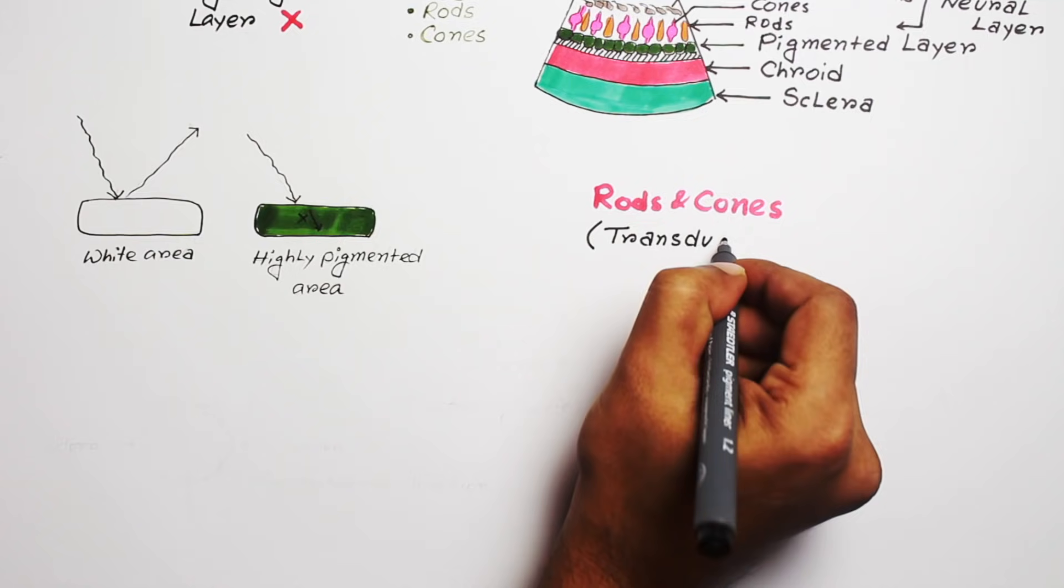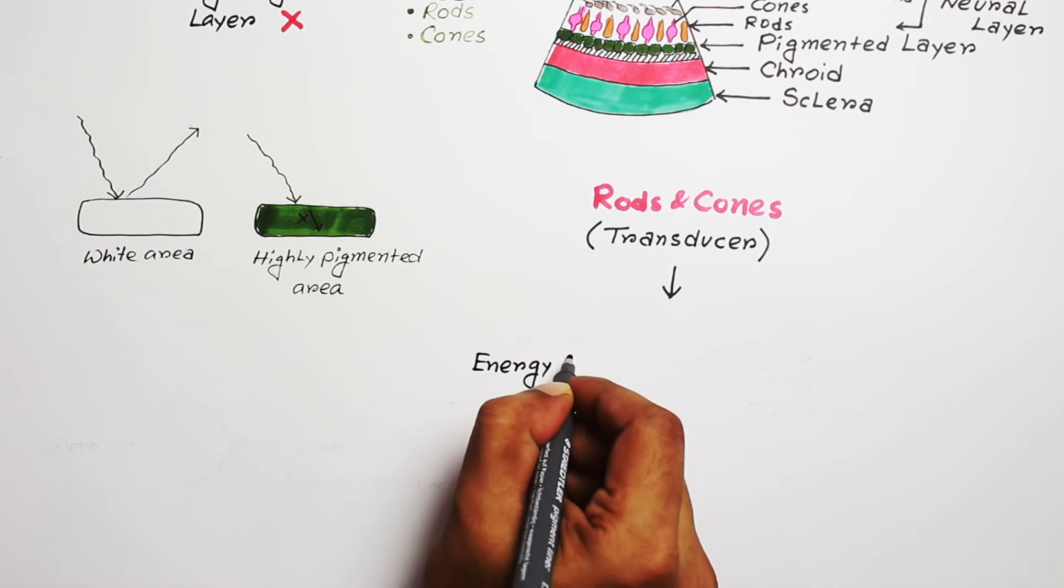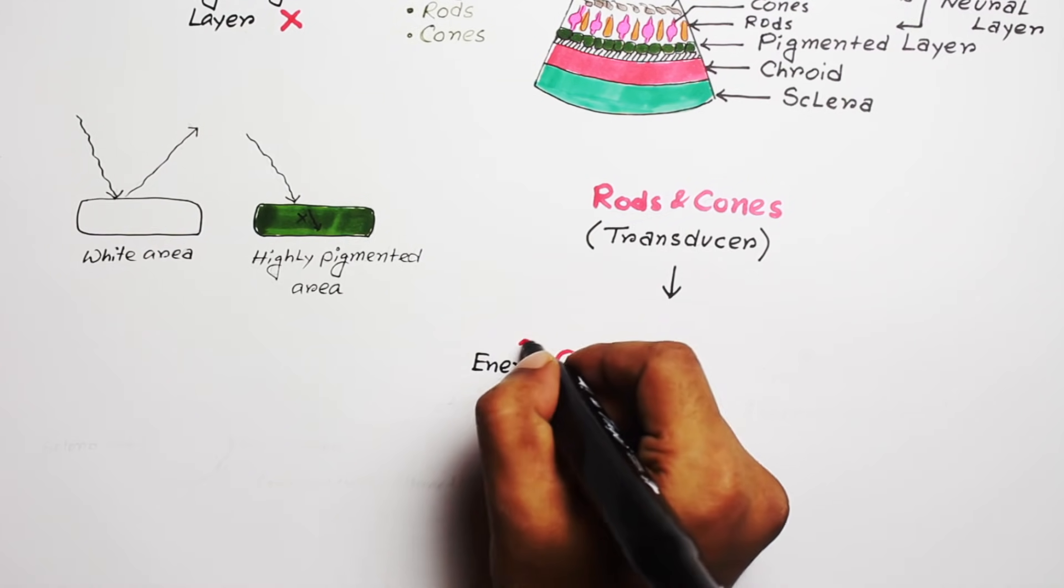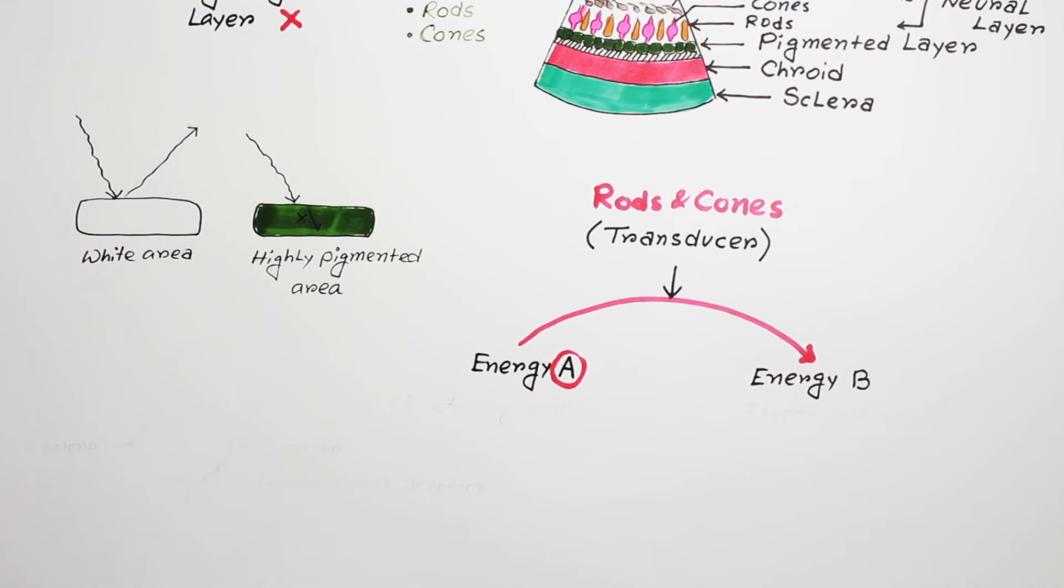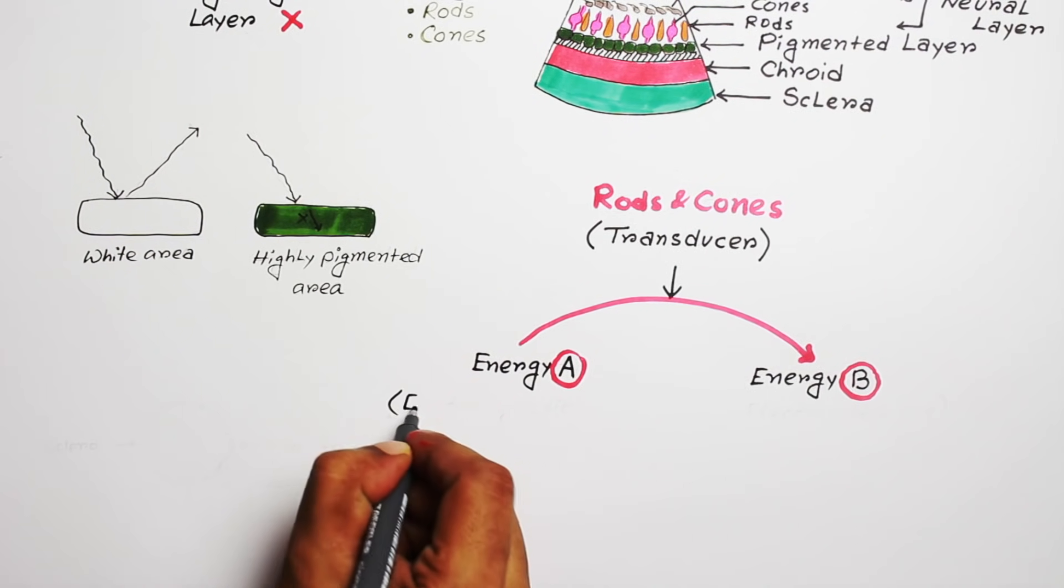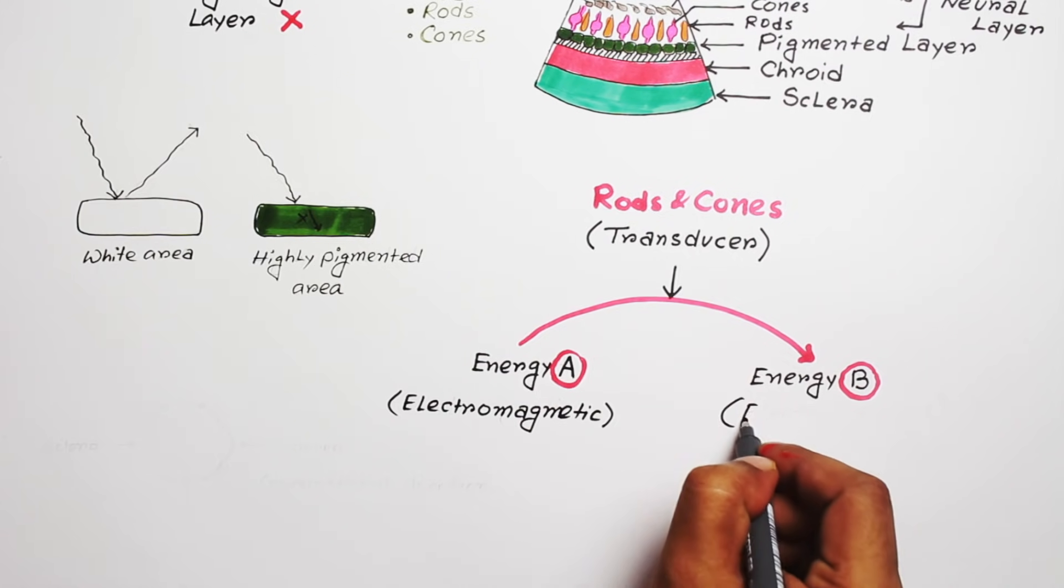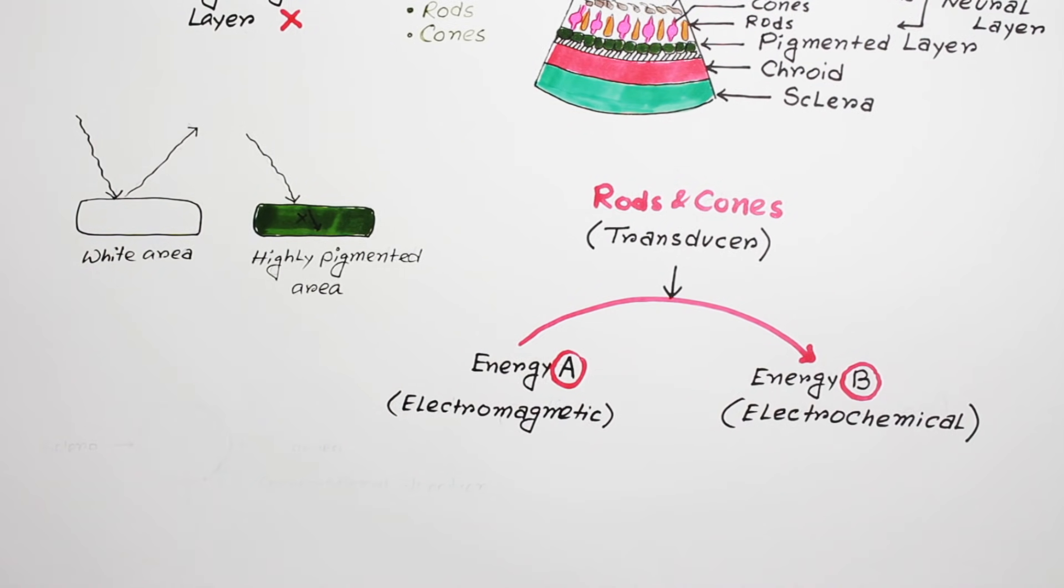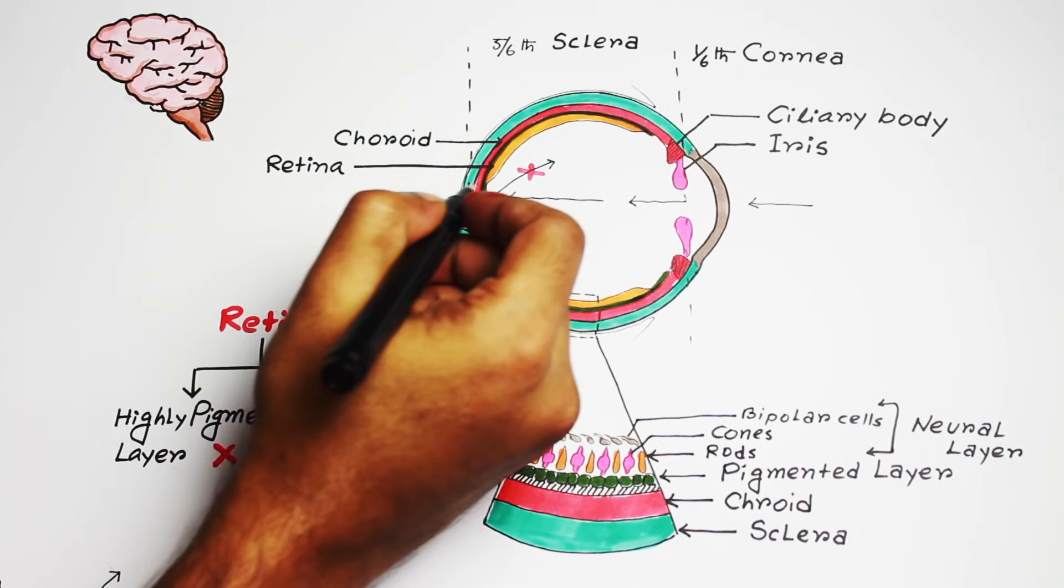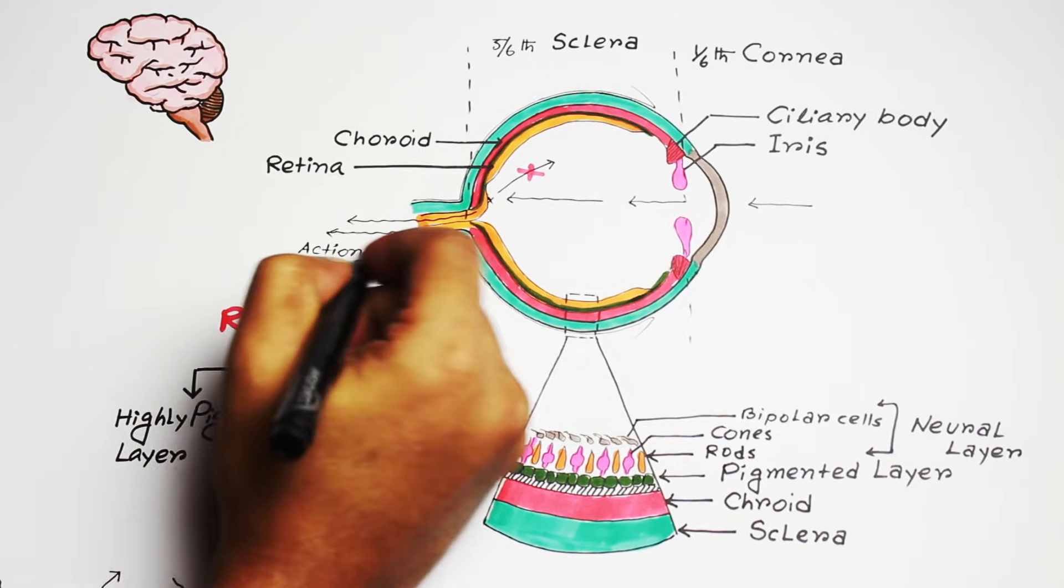They are special types of transducers. You know what transducers are? It is a special entity which can convert one type of energy to another type of energy. Light is electromagnetic energy. When light falls on the rods and cones, rods and cones get activated and produce action potential.